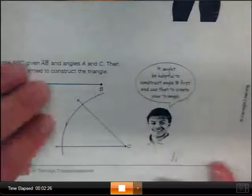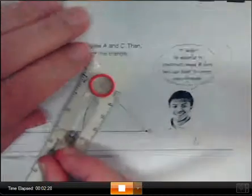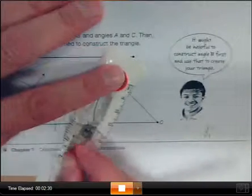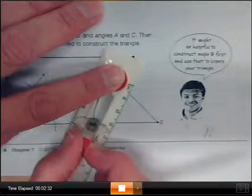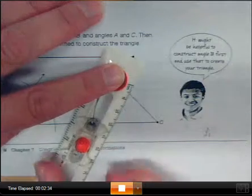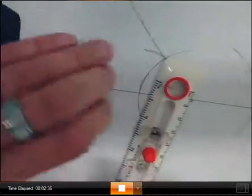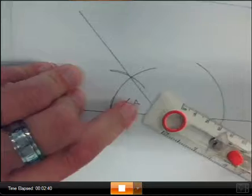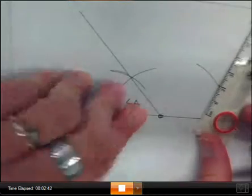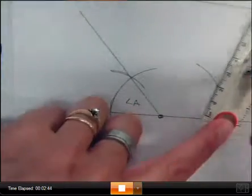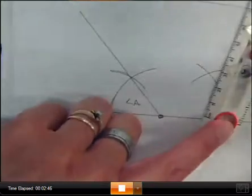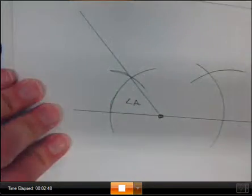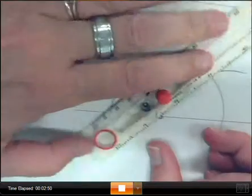This is for my angle C. So once I made my initial arc, I'm still using that same vertex. I'm going to come over here, set my compass to that opening. It crossed, intersected my line here. So I go to that spot, make my arc mark, and that is my angle C.